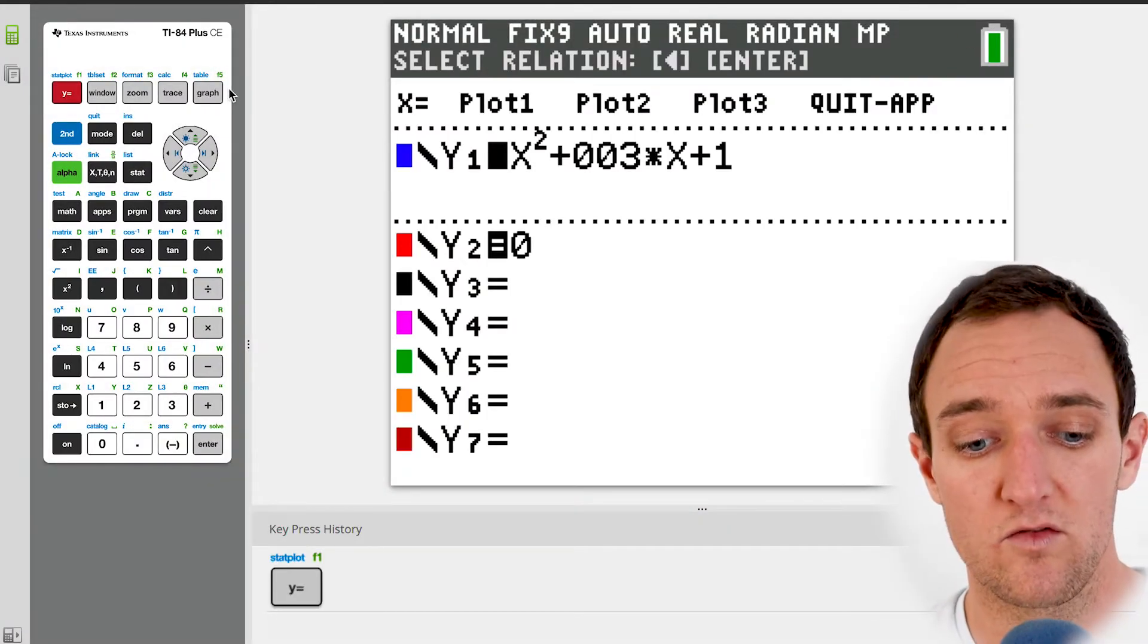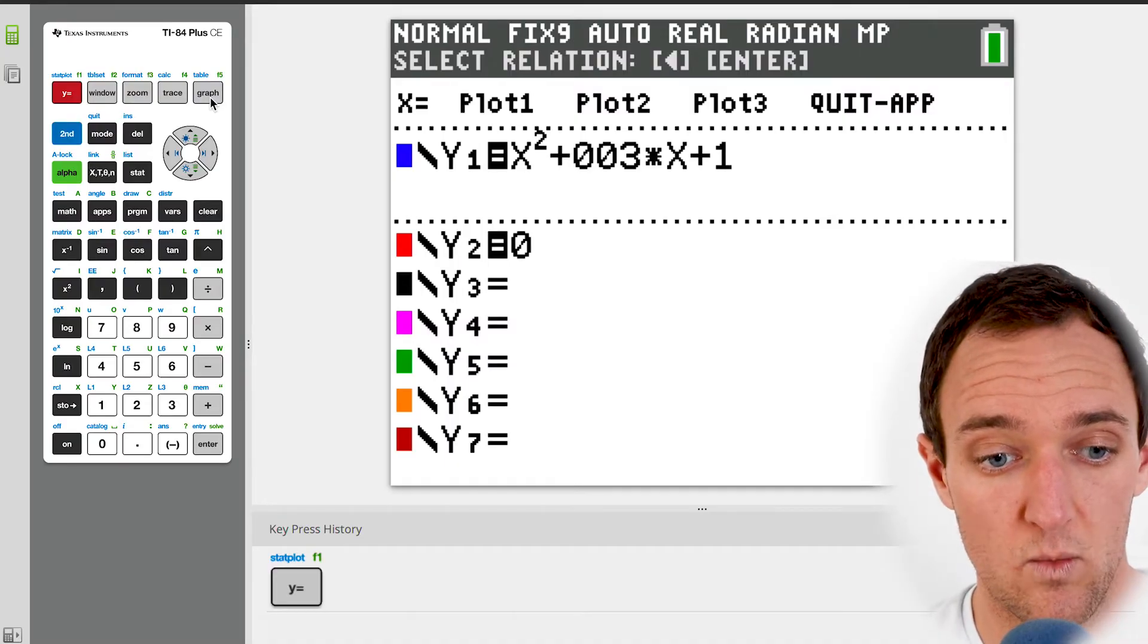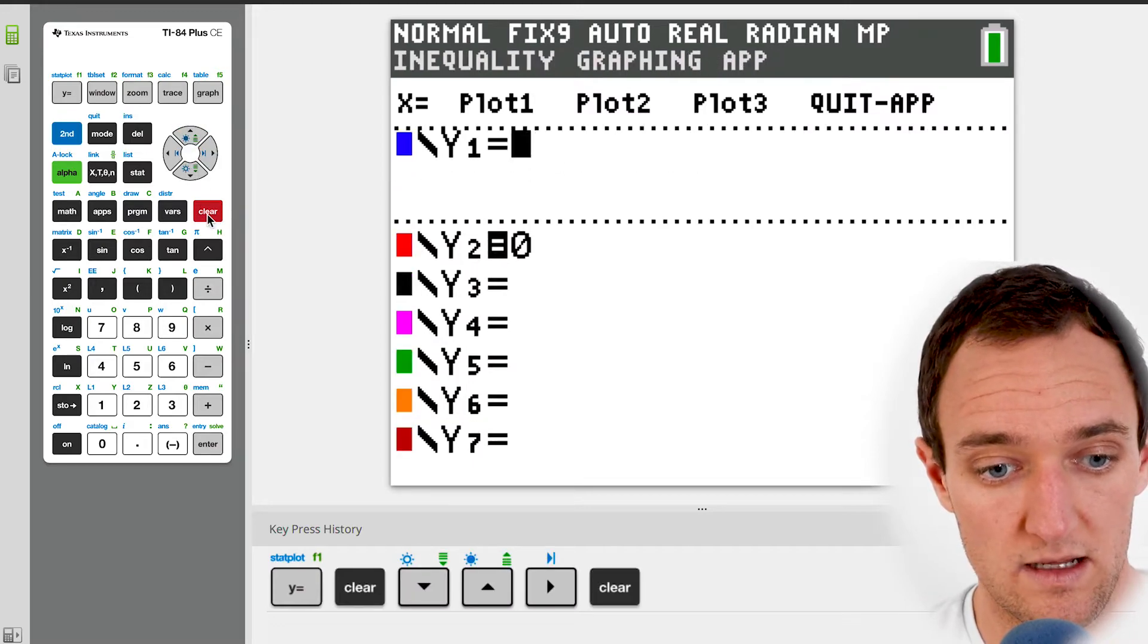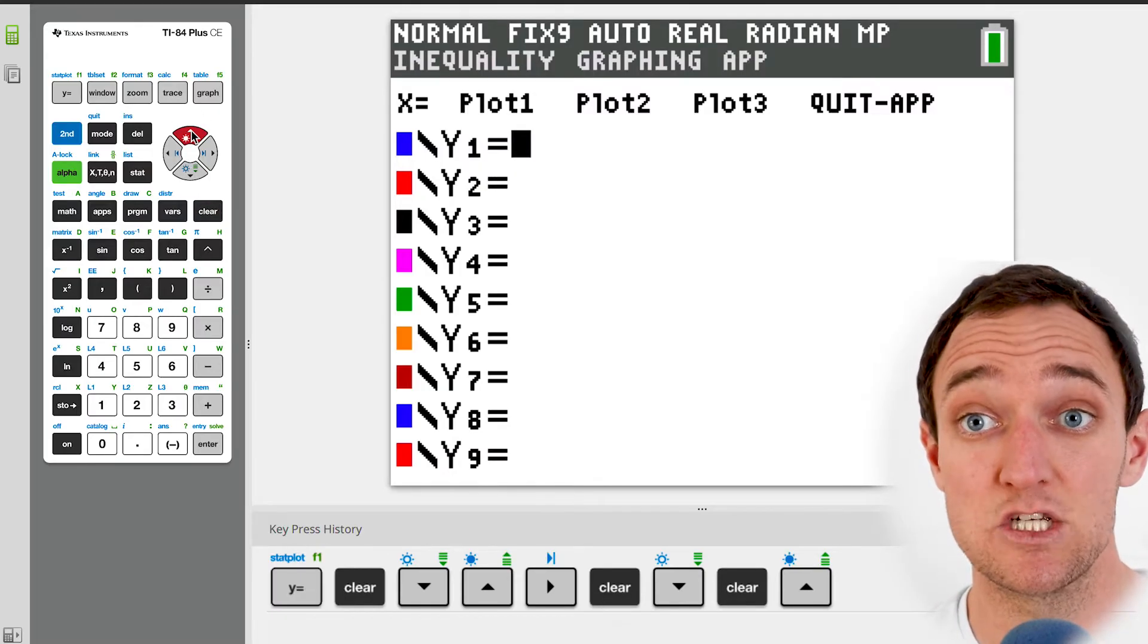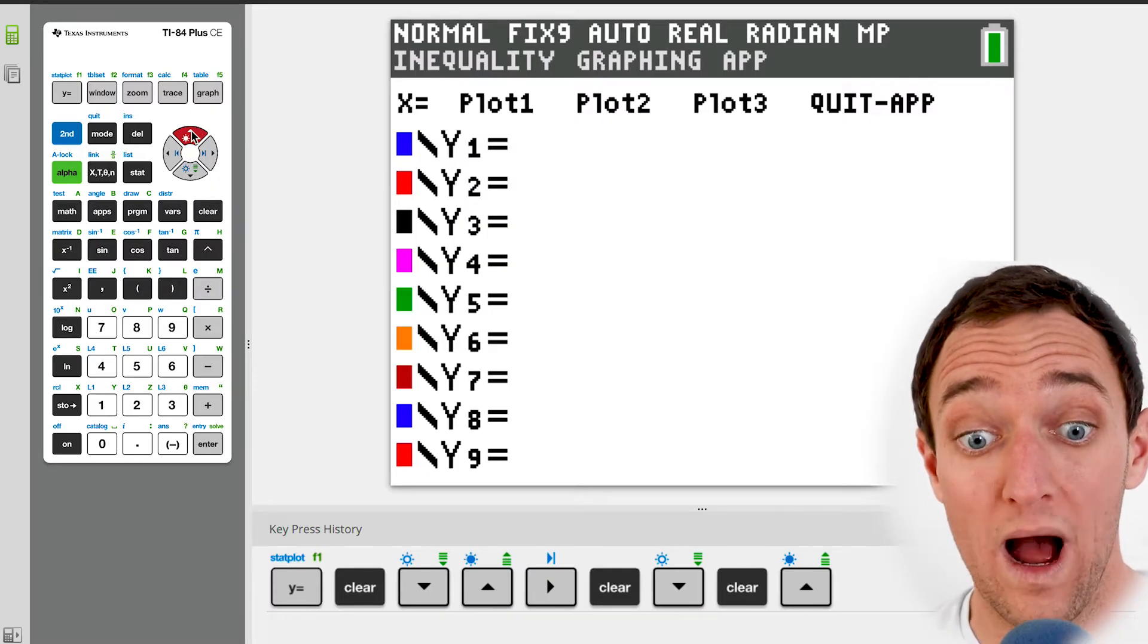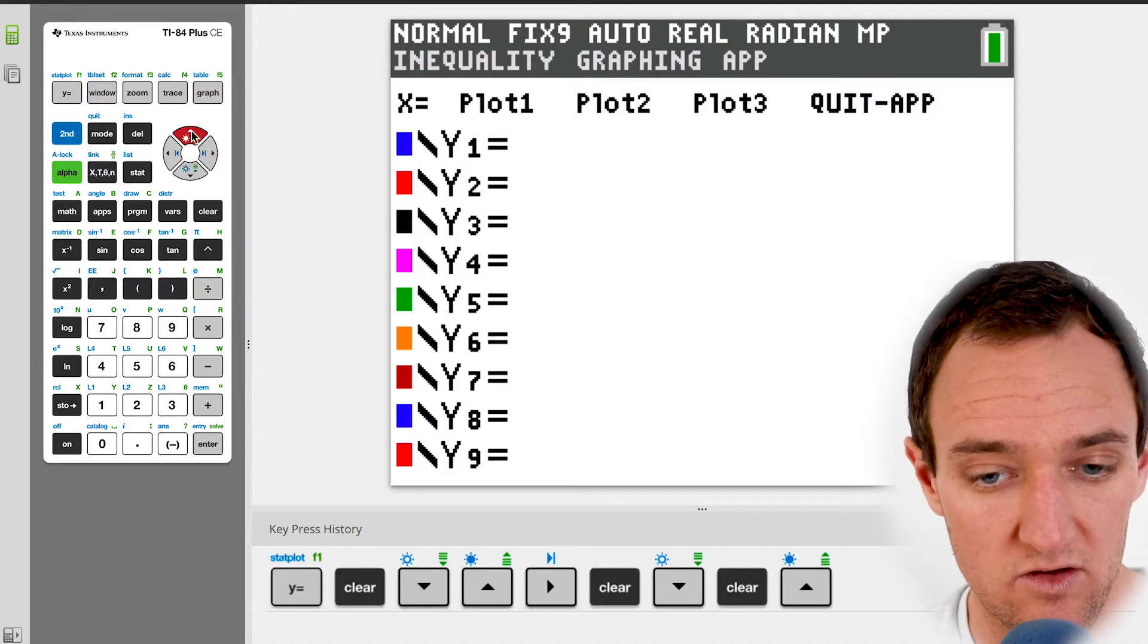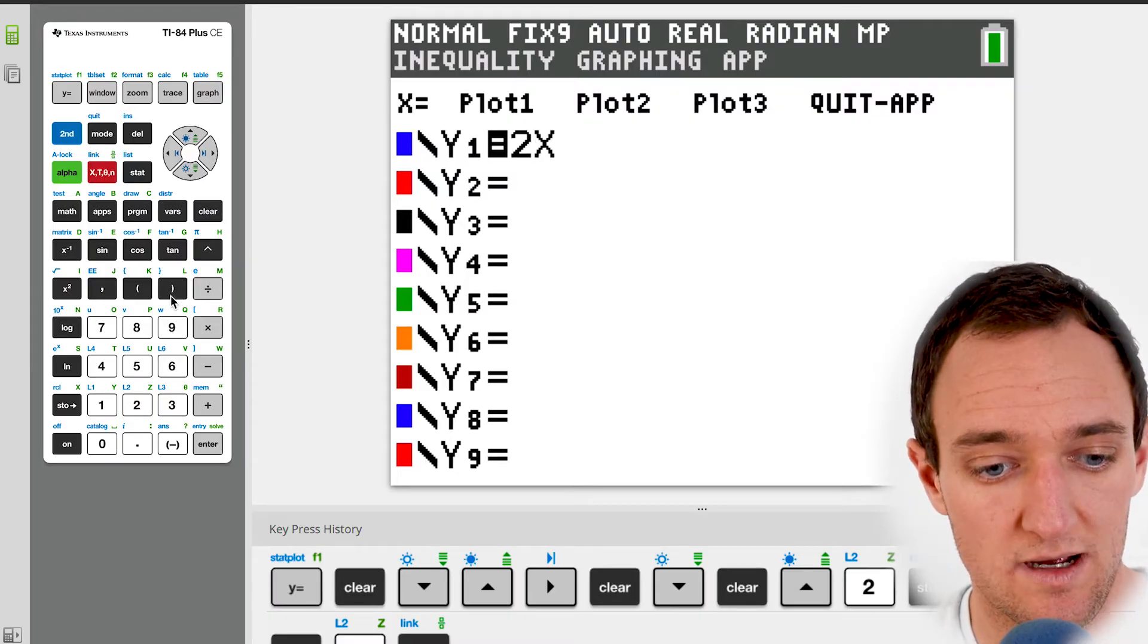So I'm going to pull up my TI-84 calculator here. Now you can see I've got it right here in real life, but I have this computer version as well so you can just follow along with that. And the main thing that we want to do when we start wanting to solve these systems of equations is going to Y equals. So you can see here, you can follow along with my key press history down here at the bottom. I hit Y equals. We want to clear this out. And so what we want to do here is we have two equations. We always want to get these two equations into our Y equals area here. So the first one's easy enough, right? We just say 2X plus 6.